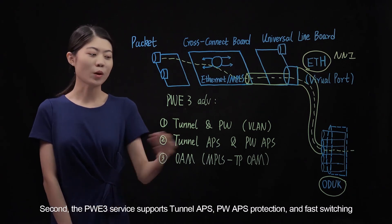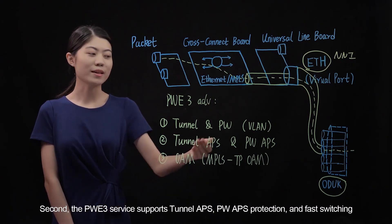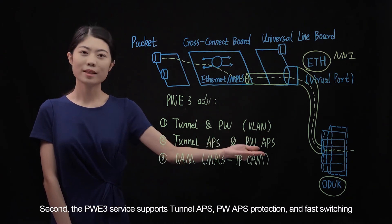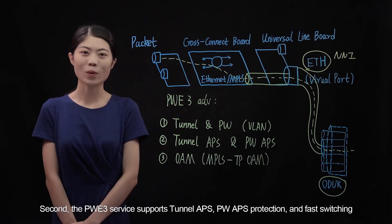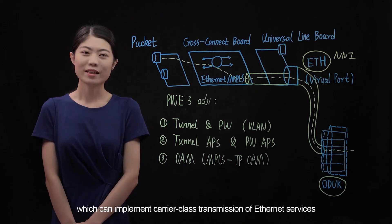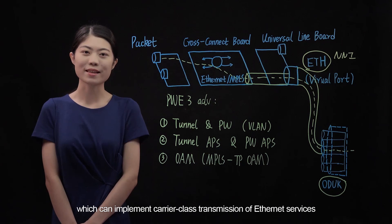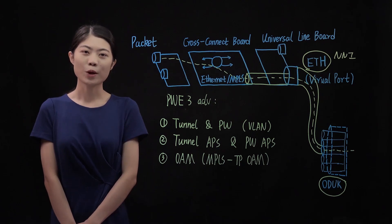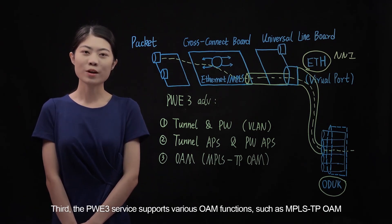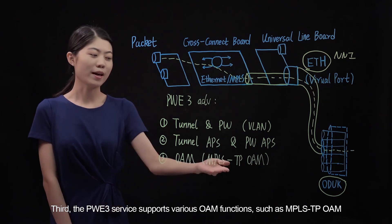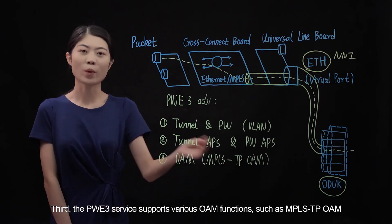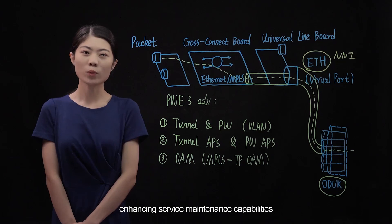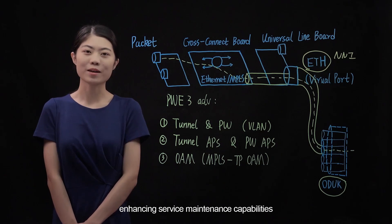Second, the PWE3 service supports tunnel APS, PW APS protection, and fast switching, which can implement carrier-class transmission of Ethernet services. Third, the PWE3 service supports various OAM functions such as MPLSTP OAM, enhancing service maintenance capabilities.